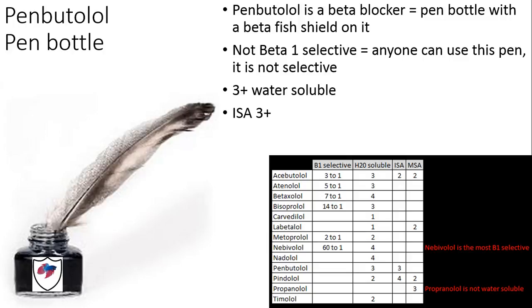Now we have penbutolol, which kind of sounds like 'pen bottle' to me. So penbutolol is a beta blocker — you've got a pen bottle with a beta fish on it. It's not selective; anybody can pick up this pen and use it, it's not a selective pen. Three-plus water soluble — I probably should have put a three somewhere on there, oops.